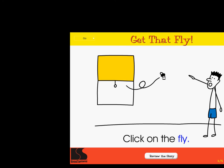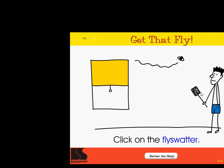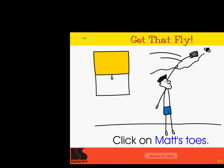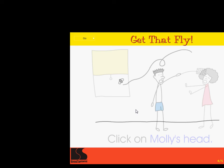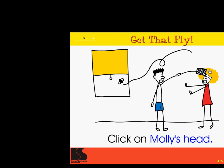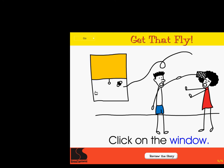Click on the fly. Excellent. Click on the fly swatter. Correct. Click on Matt's toes. Super. Click on Molly's head. Right on. Click on the window. Wow.